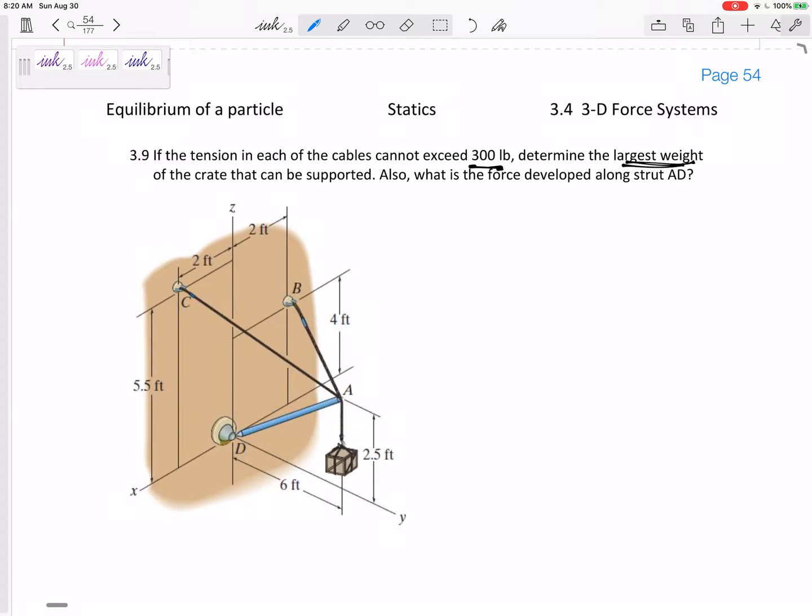All right. So, do you see that point A is the point that's in equilibrium? If I was to draw a free body diagram, I would draw a free body diagram of A, but I don't require you to draw free body diagrams if they are in 3D, because it's hard to draw that.